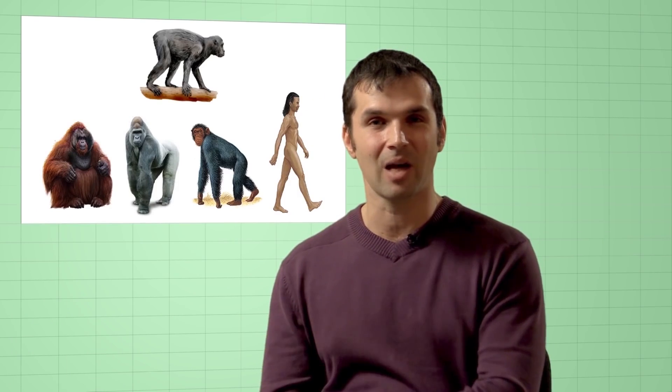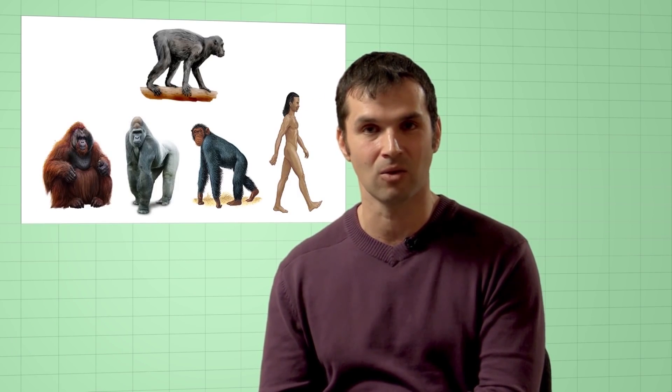For instance, in the course of evolution, our ancestors' legs had been lengthening in relation to their arms. But for chimp ancestors, it was the other way around. Their arms had been lengthening in relation to their legs.